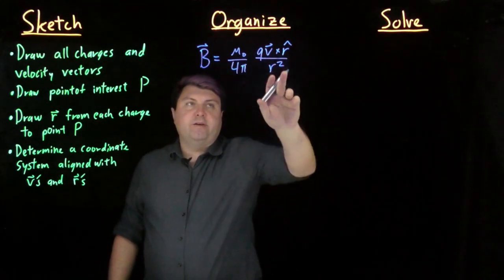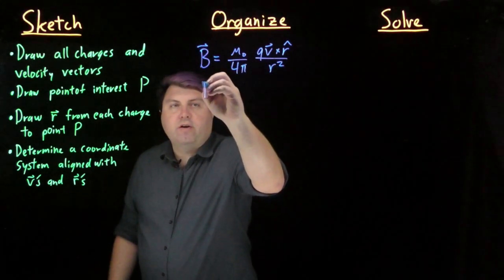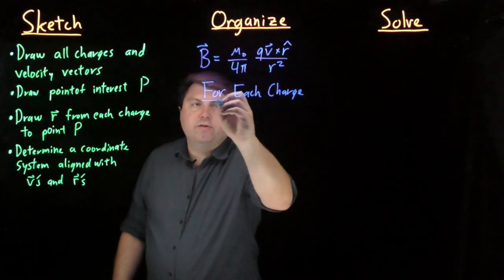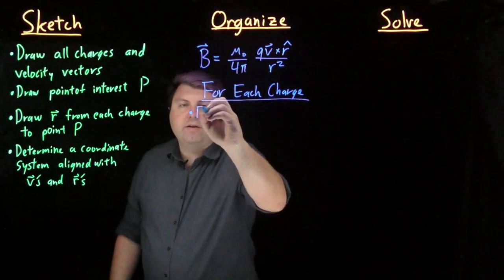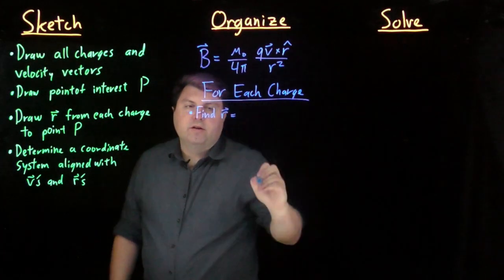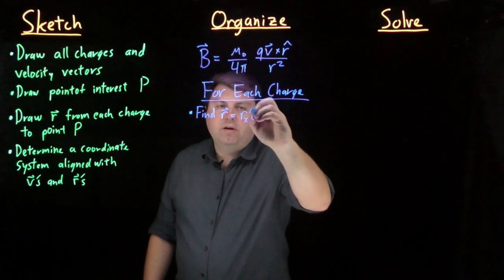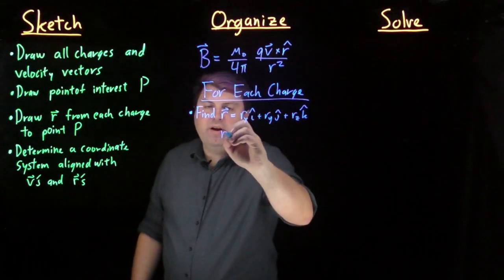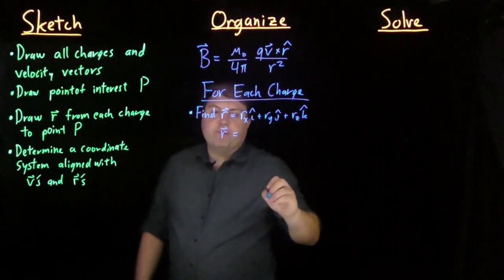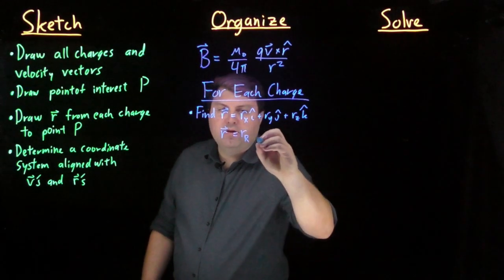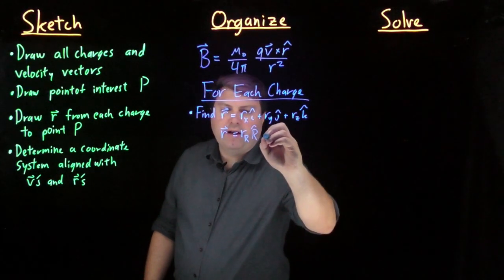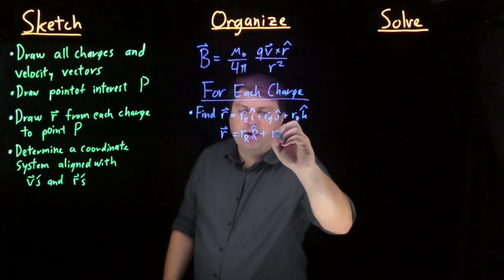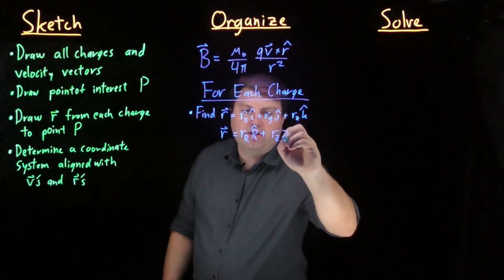So we have our magnetic field mu naught over 4 pi qv cross r hat over r squared. For each charge, we are going to write find r vector, which we can have as r_x i hat plus r_y j hat plus r_z k hat. Very often, since we are going to be in RTZ, it might be more useful to have the radius in the two-dimensional radial direction capital R hat. We don't actually have to worry about moving in any theta direction, but we can worry about the azimuthal direction r_z z hat.